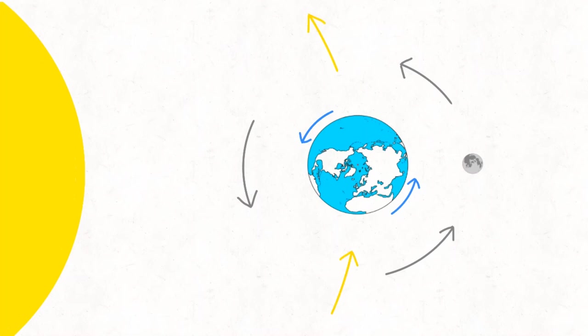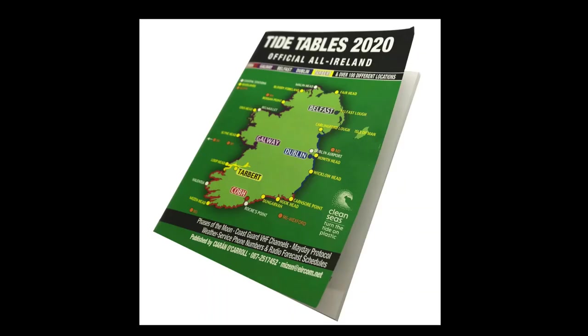And together we go on our yearly rotation around the sun. But these paths and rotations are thankfully very predictable and can be put into a table format, which we refer to as our tide tables.